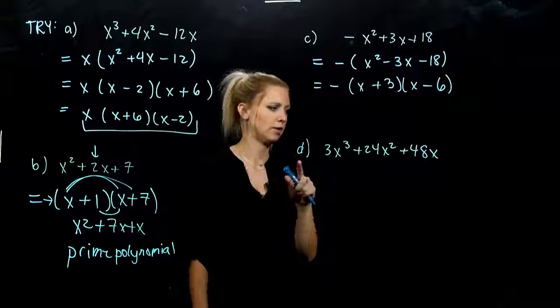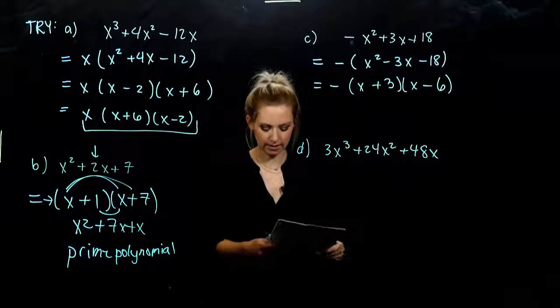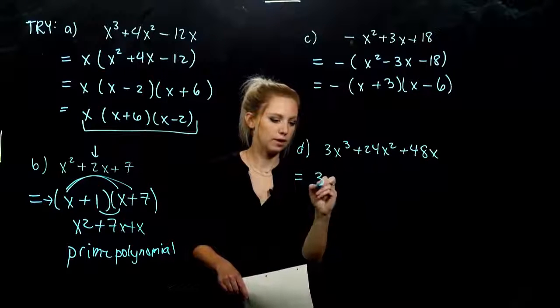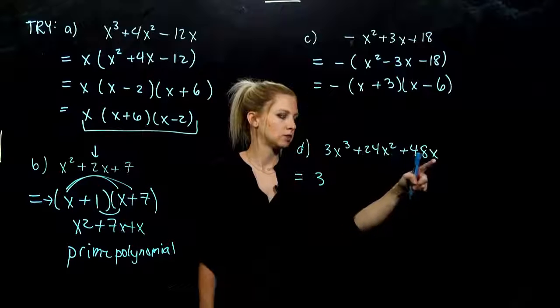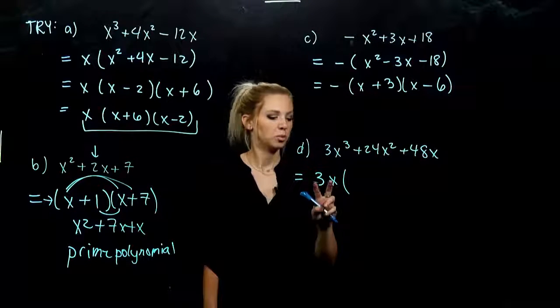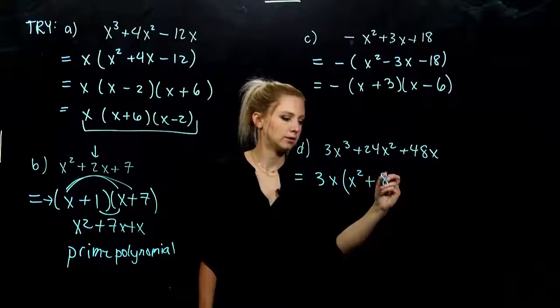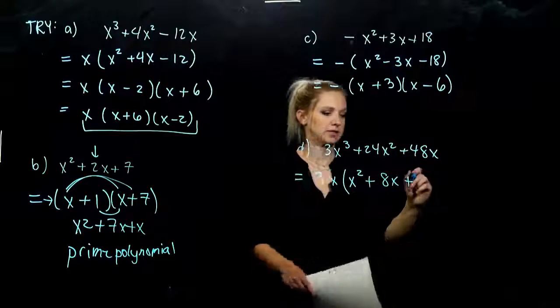And very last, almost there. Look at common between all three of these that we can take out of everything. Factor of 3. And what else? Smallest power of x is what we can take out. When we do that, what are we left with? x squared plus 8x plus 16.